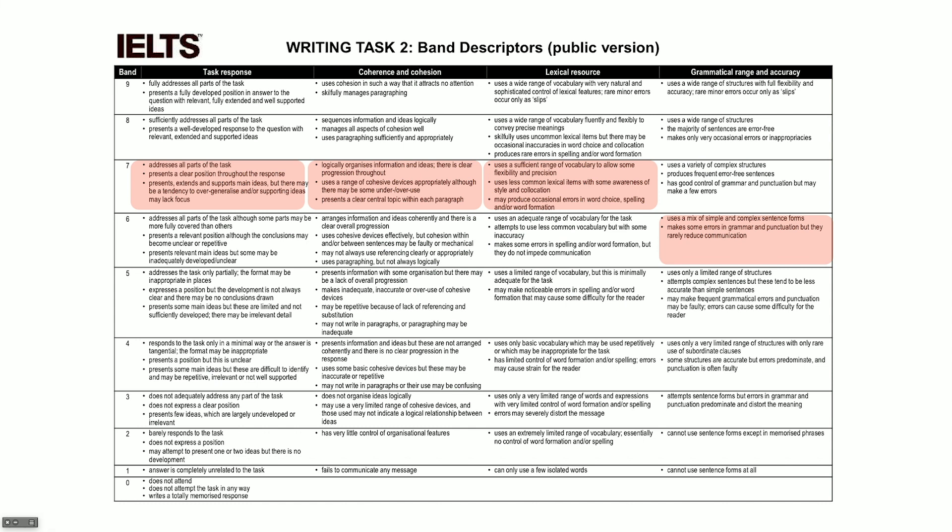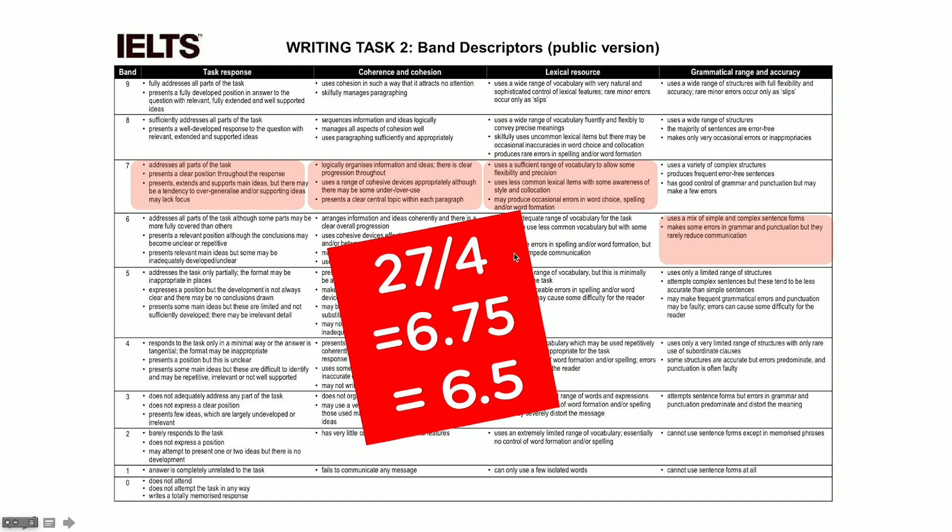What happens though if you get a seven for topic, seven for structure, seven for vocabulary, and a six for grammar? Again, you're going to get the average. So it's 27 divided by four — that is 7+7+7 equals 21, plus 6 equals 27. We divide by the four criteria, you get 6.75. However, they do not round you up to seven. What they do is round you down. So in fact, you're going to get 6.5.